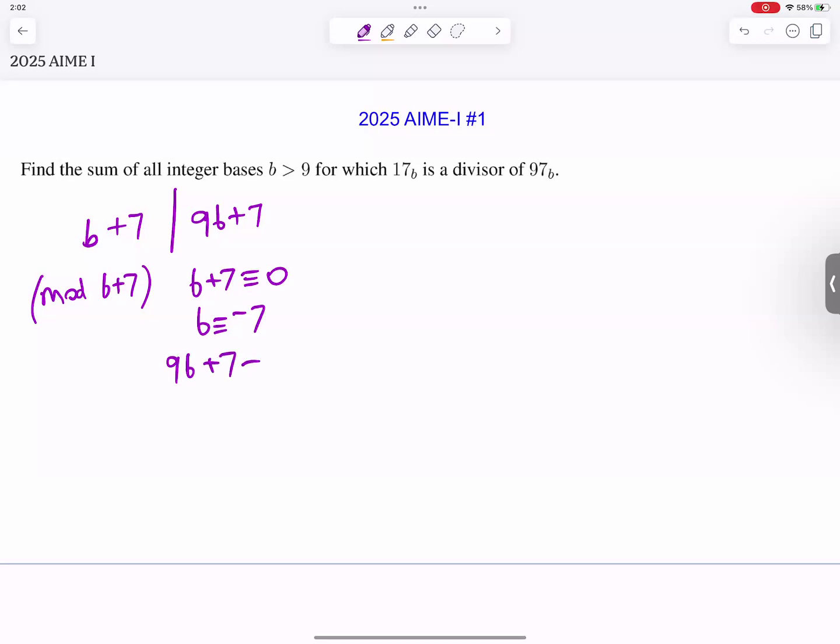Hence 9b plus 7 is the same as 9 times negative 7 plus 7, or negative 56, and I want this to be 0. So that means the modular should divide the difference.